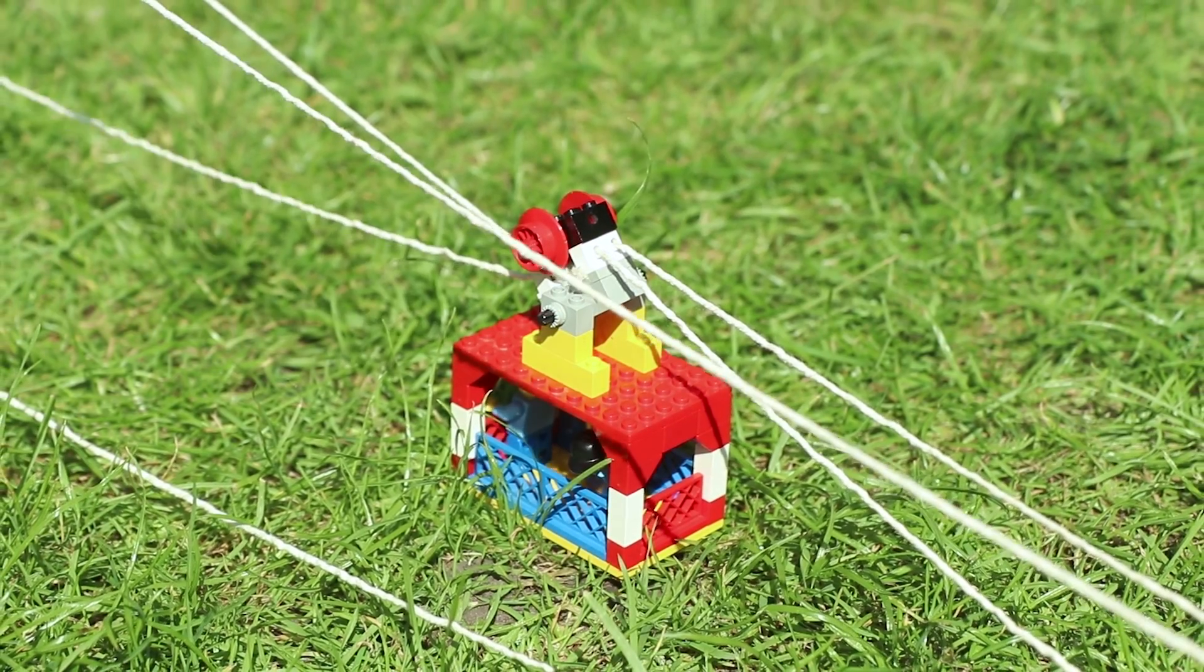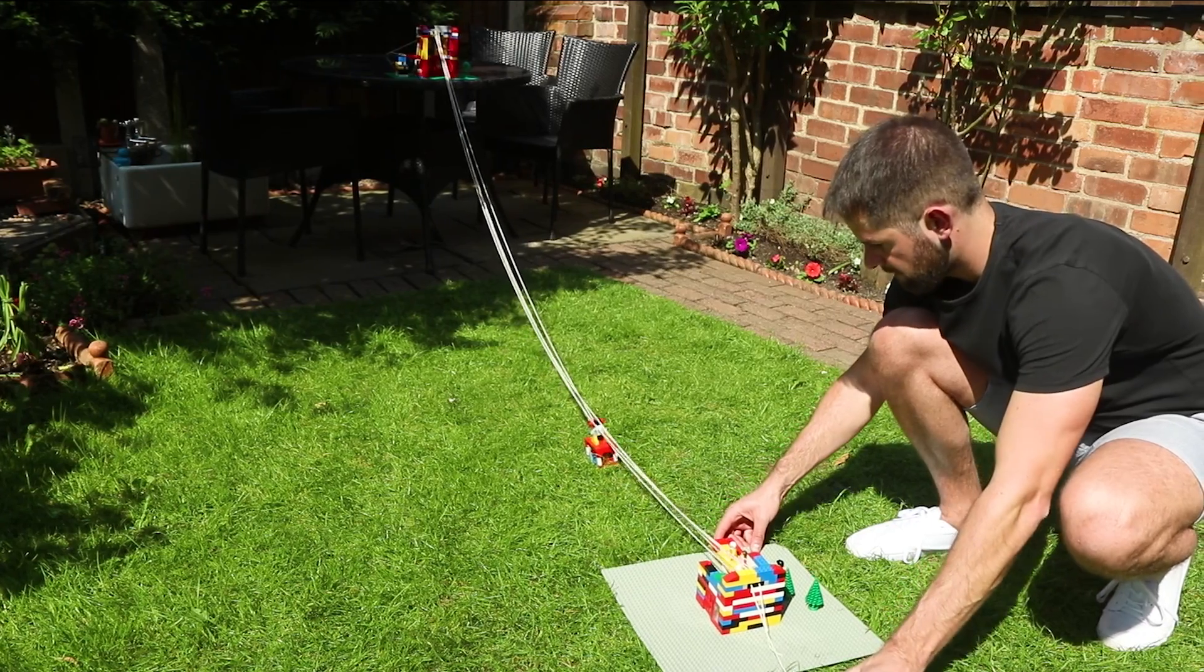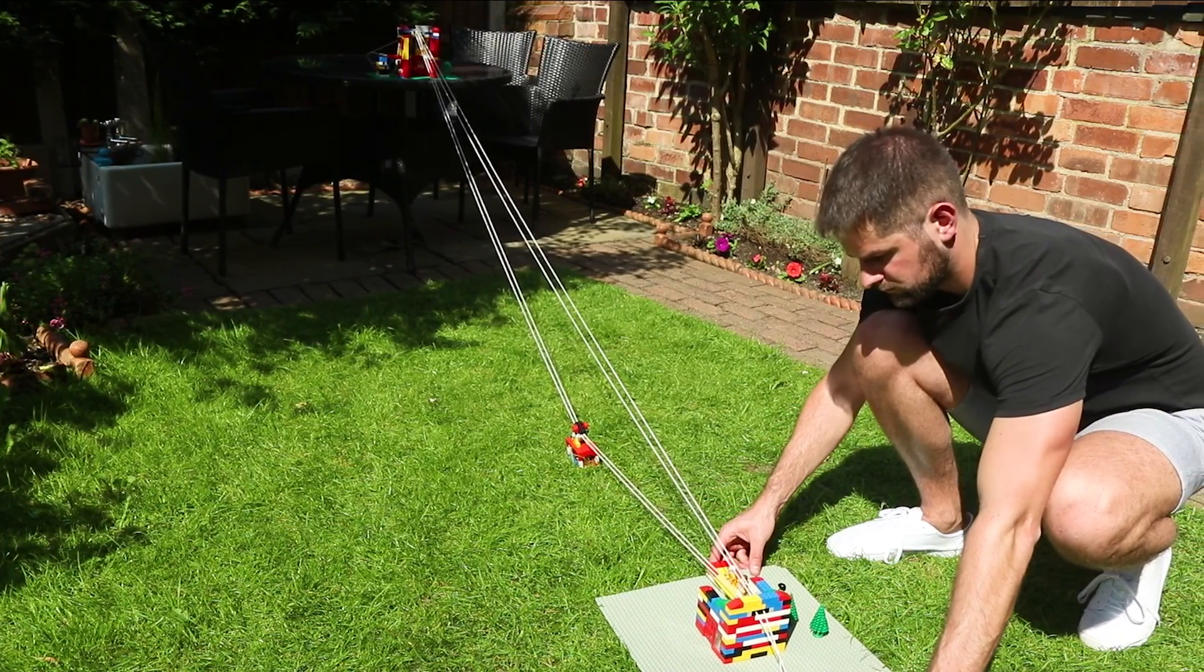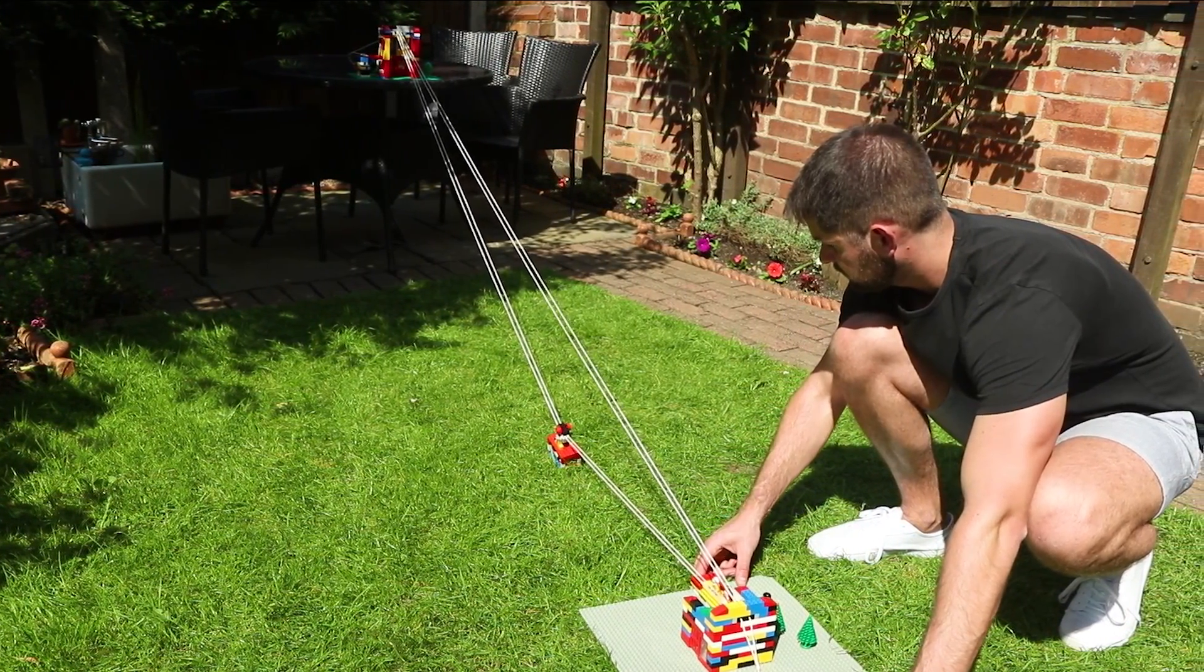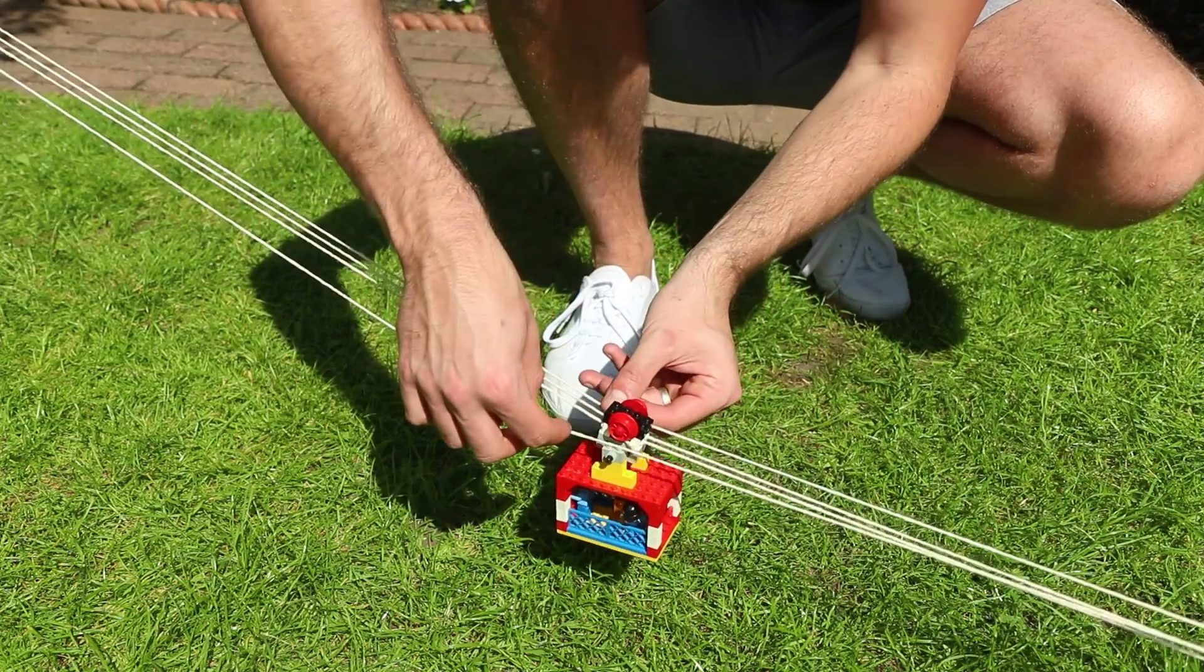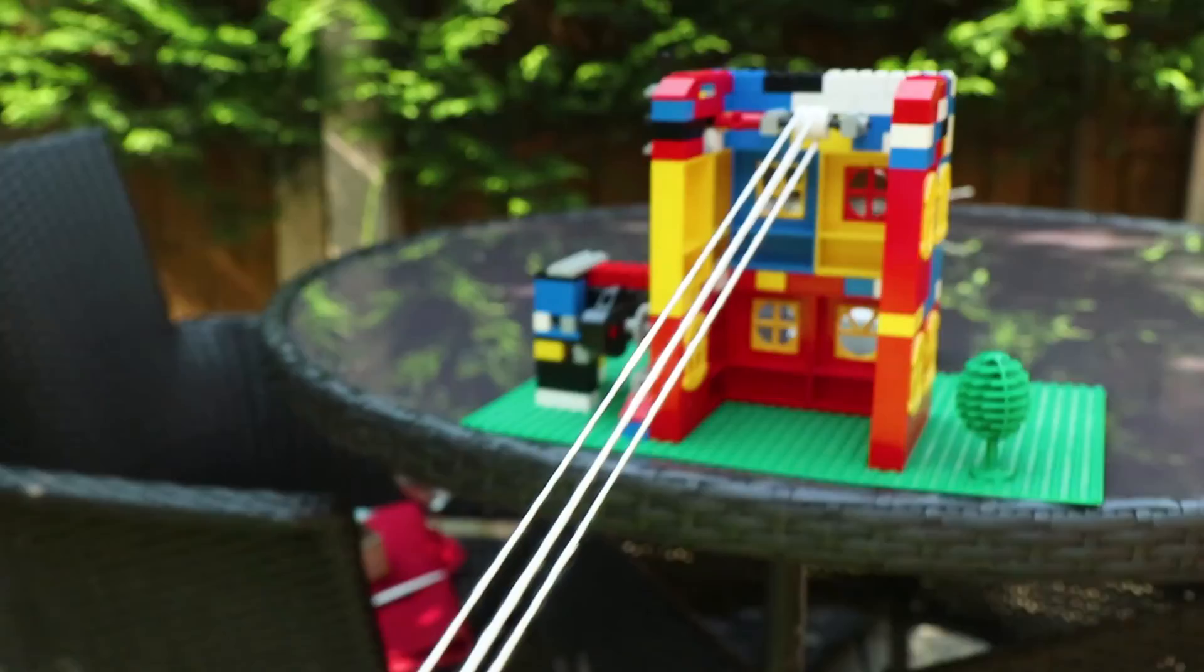Now gently pull back the base station until your cables are nice and tight until the cable car rises off the ground. Then run the top two cables under the two wheels on top of the cable car.